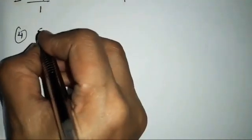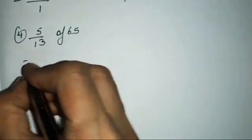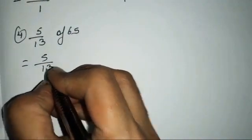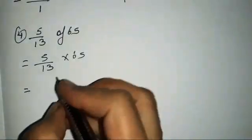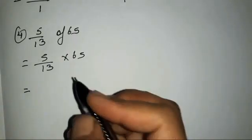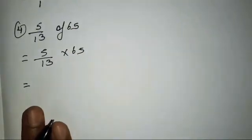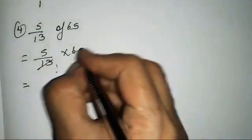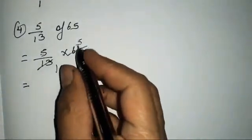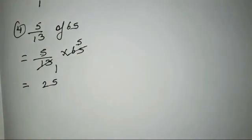The last sum is 5/13 of 65, meaning 5/13 × 65. Directly: 13 and 65 cancel — 13×5 = 65 — giving 5, then 5×5 = 25. No need to multiply out fully; the shortcut gives us 25. I hope this exercise is clear to everyone. See you in the next video!